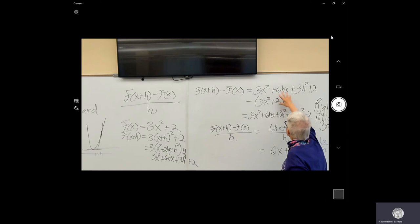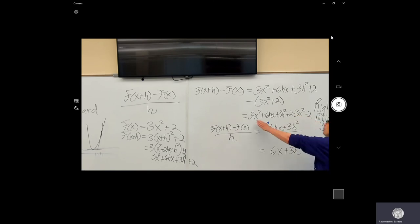f of x plus h minus f of x equals this minus the original f of x. We distribute the minus sign into 3x squared plus 2, and that gives us minus 3x squared minus 2.